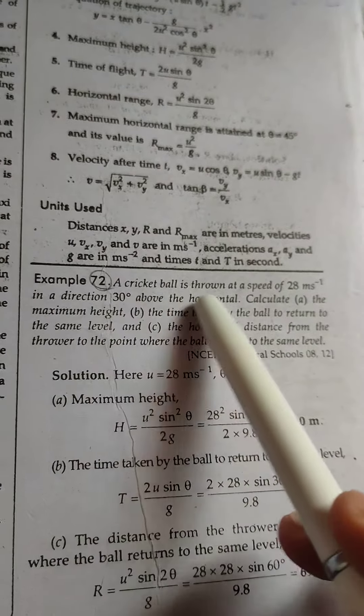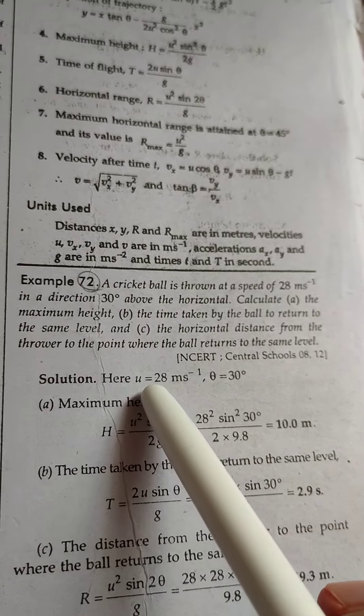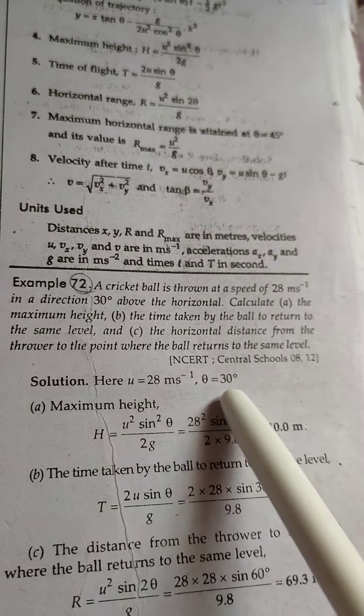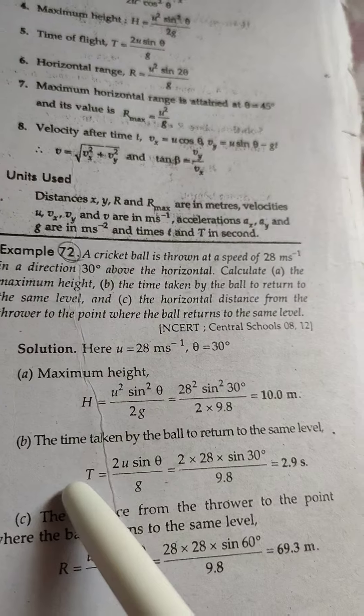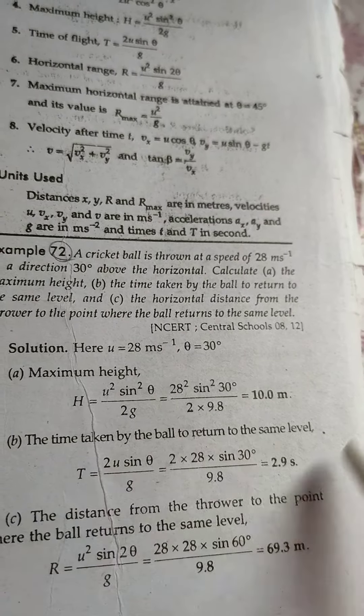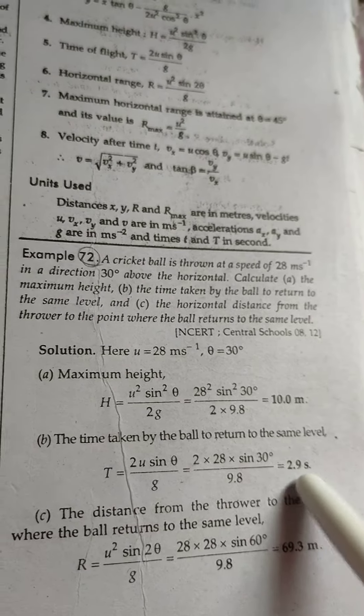Now we will solve this numerical. A cricket ball is thrown. This is the numerical. Velocity is given by 28 meters per second, θ is 30 degrees. So we have to calculate maximum height by using this formula. Time taken by the flight is given by this formula. So 10 meters and 2.9 seconds is the answer of this question.